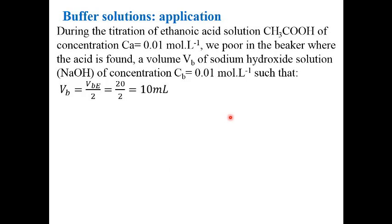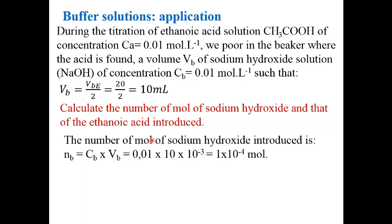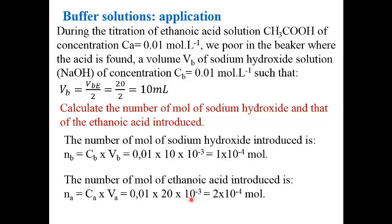Here is an application. During the titration of ethanoic acid solution — a weak acid of a given concentration — we pour into the beaker a volume VB of sodium hydroxide (strong base) of concentration C such that VB equals VBE/2, which is 10 mL. So we are at the half-equivalence point. The question asks to calculate the number of moles of sodium hydroxide and ethanoic acid introduced. The number of moles of NaOH is Cb × VB, and the number of moles of ethanoic acid is double that, since we intend to reach the half-equivalence point.